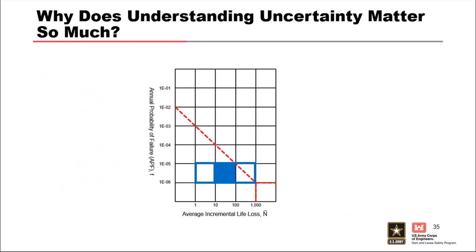Why does this matter? If your SQRA shows life loss between 10 and 100, but there's a chance it could be 100 to 1,000, and that upper range is riding your total risk guidelines, you may need additional investigations to determine if that's plausible. If you can rule out the high end, you don't need further risk reduction. If it's riding the line, that's when you need to spend extra effort on determining how confident you are in consequences and whether additional study can move things one way or another.